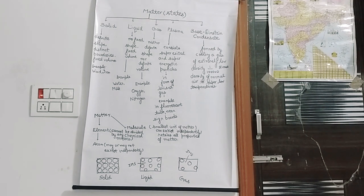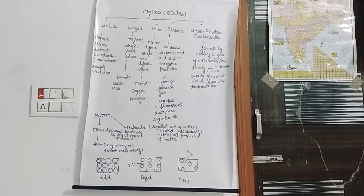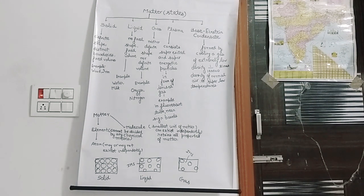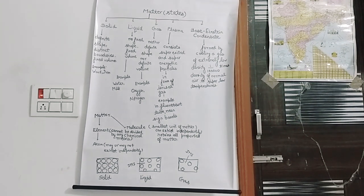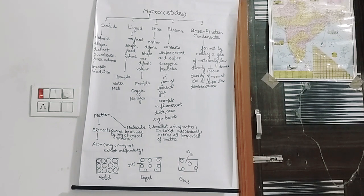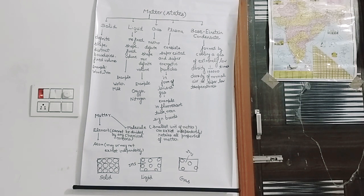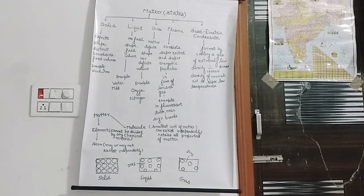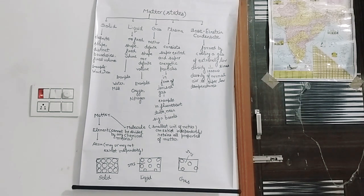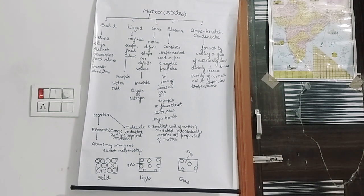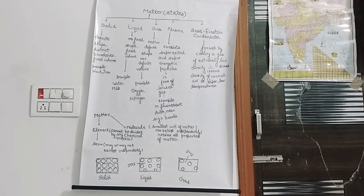Gases are free to move in the container or vessel they are kept in. That's why whenever you spray a perfume at one end of the room, within seconds you can smell it at the other corner of the room as well. Now, what is plasma? These are basically super excited and super energetic particles — there is too much energy in these types of particles.